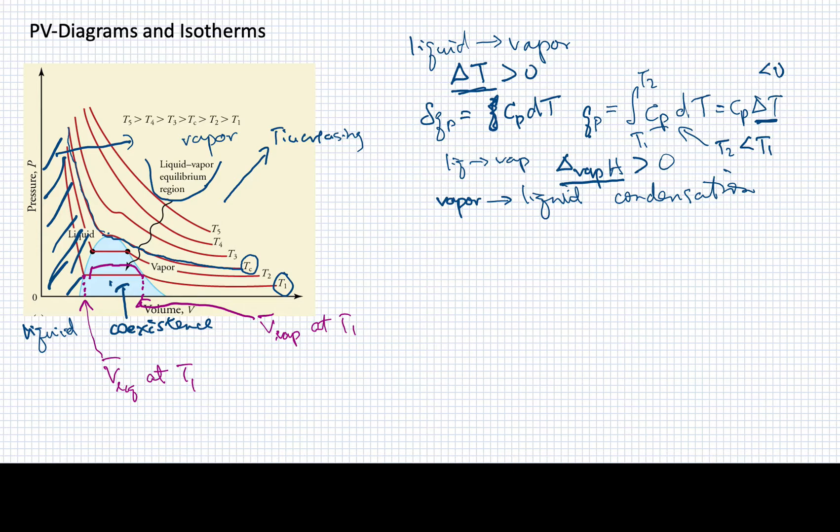All right, if we were able to identify, for example, the isotherm that exists at one atmosphere of pressure, so maybe it's right here, then that isotherm will also tell us the temperature of vaporization. So at one atmosphere, the temperature of vaporization, that is the isotherm that we cross when we get to this coexistence region, is the normal boiling point.